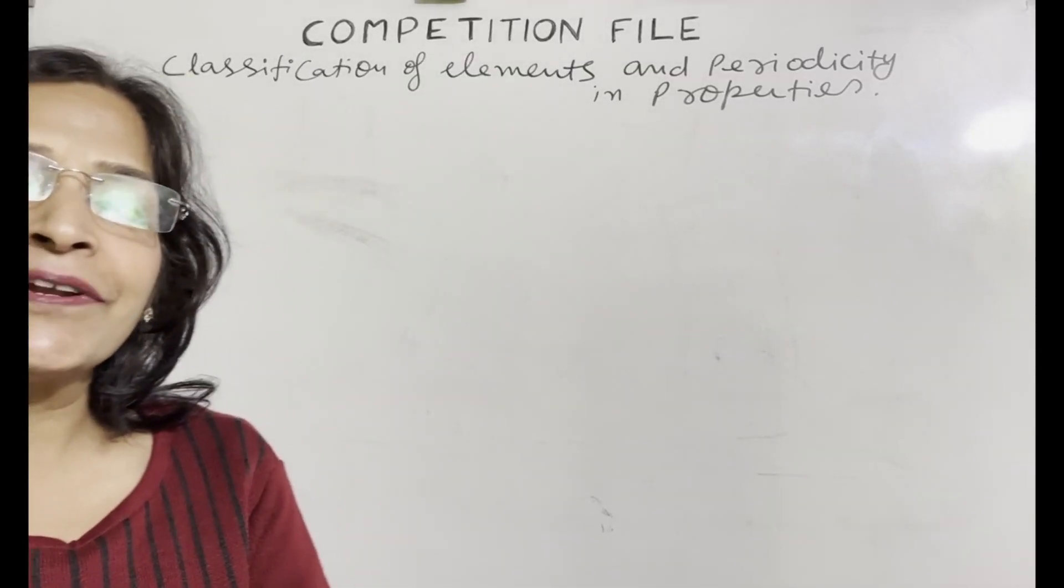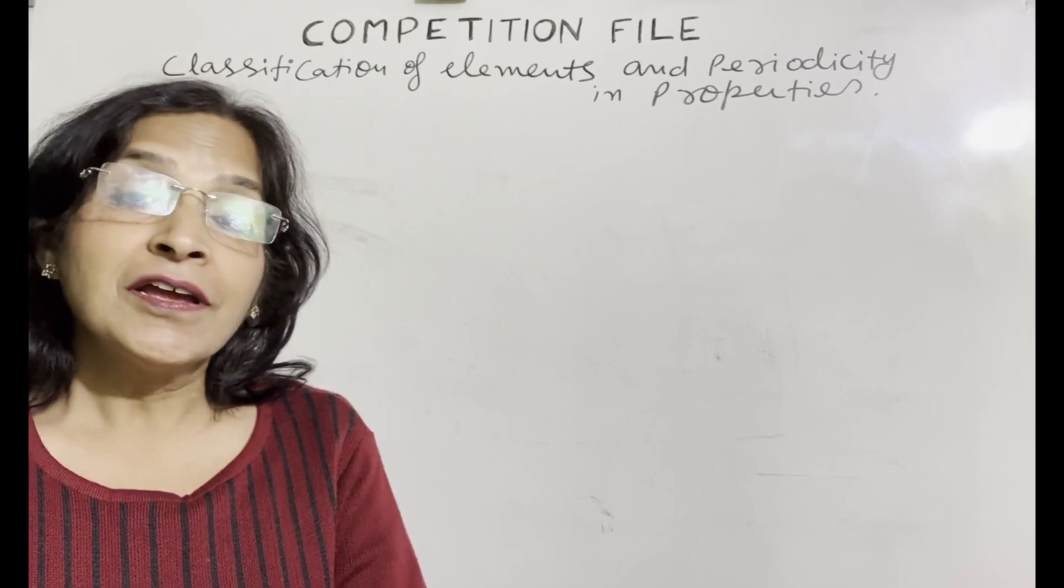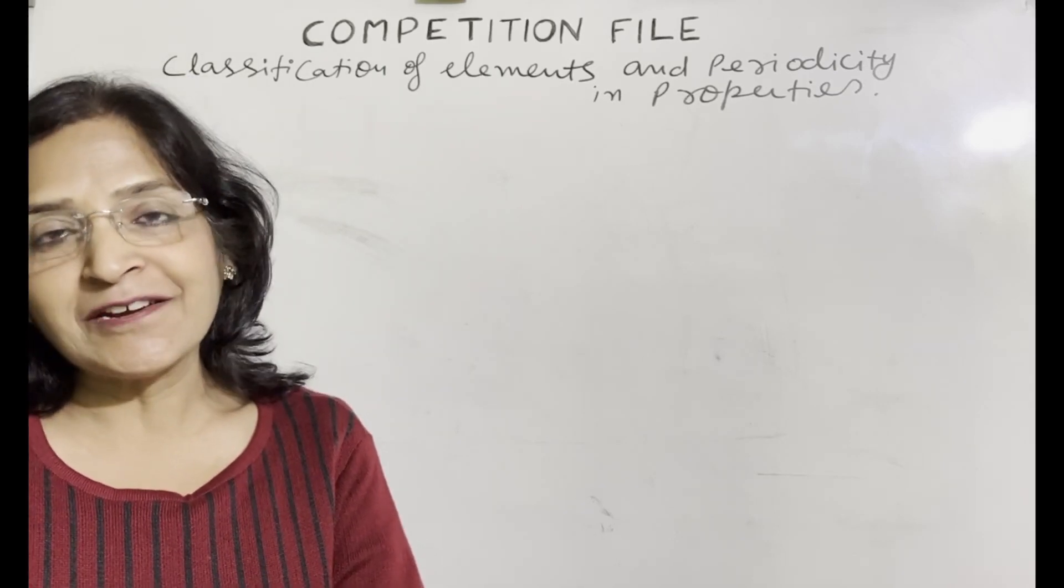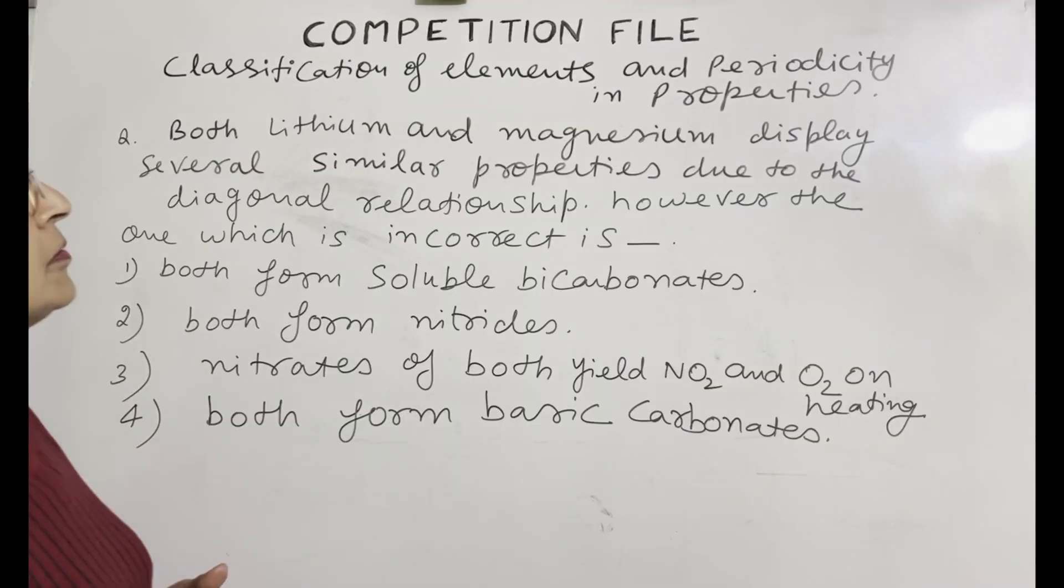Hello students, today in competition file we will do some multiple choice questions from the unit classification of elements and periodicity in property. Question number one is both lithium and magnesium display several similar properties due to the diagonal relationship however the one which is incorrect.